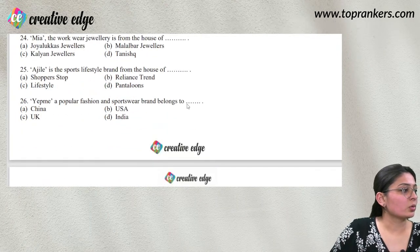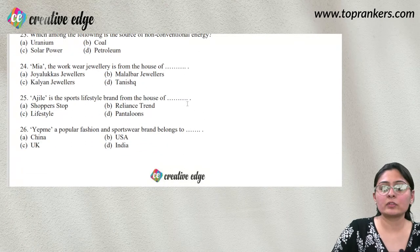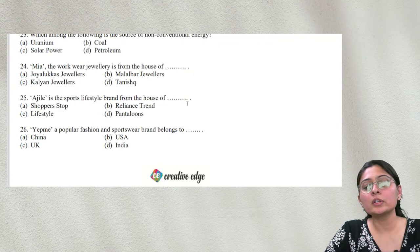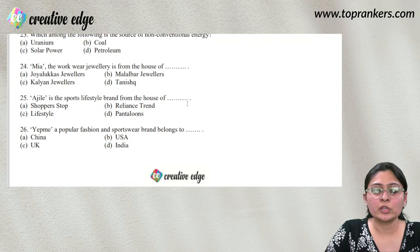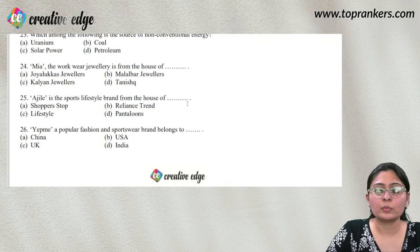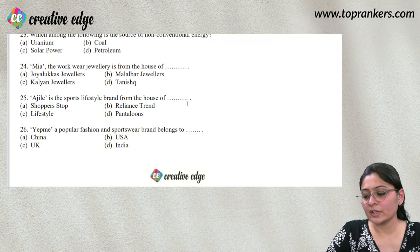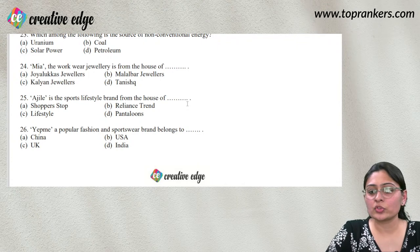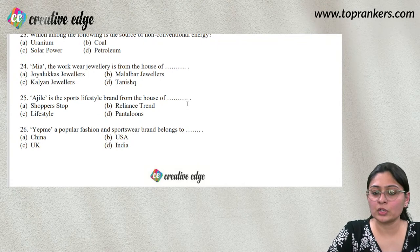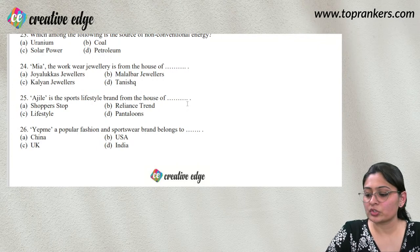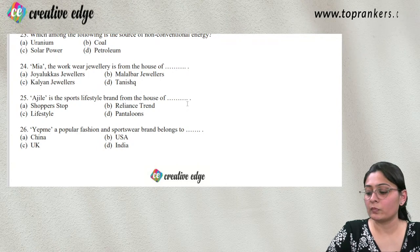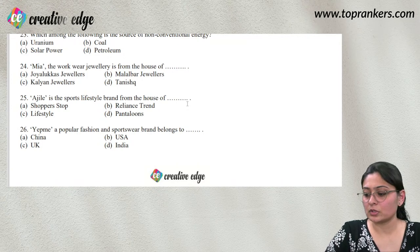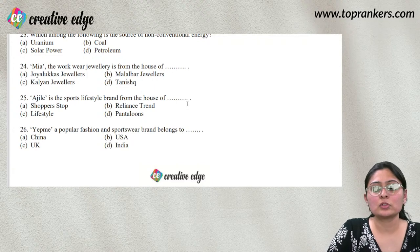Question 23: Which of the following is a source of non-conventional energy — uranium, petroleum, coal, or solar power? The answer is solar power. Non-conventional sources of energy include solar power.